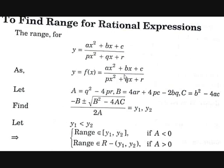Here, A is the discriminant of the denominator and C is the discriminant of the numerator. Then find the two roots using the quadratic formula: y = (−B ± √(B² − 4AC)) / (2A). Let y₁ and y₂ be those roots with y₁ < y₂. If A < 0, the range belongs to [y₁, y₂]. If A > 0, the range belongs to ℝ minus the closed interval [y₁, y₂].